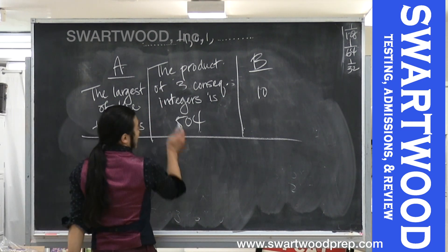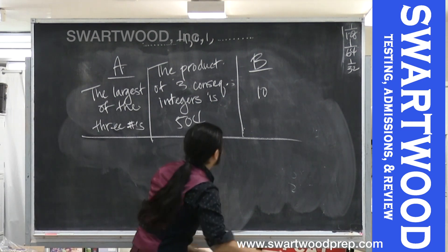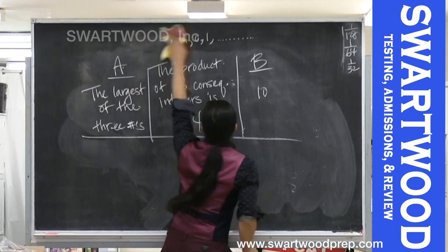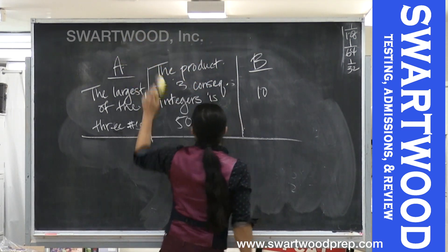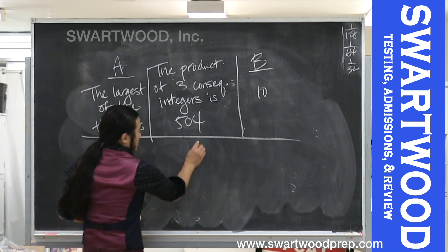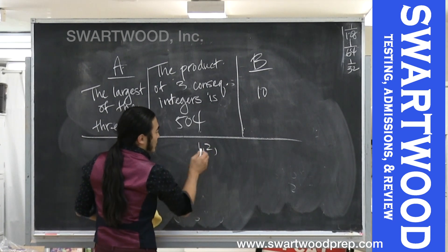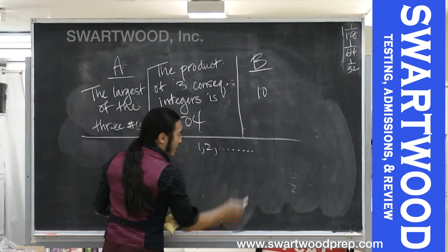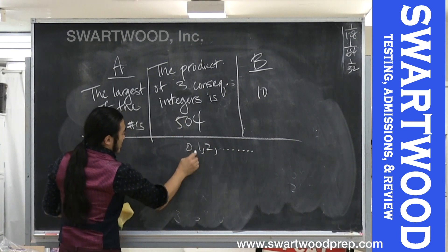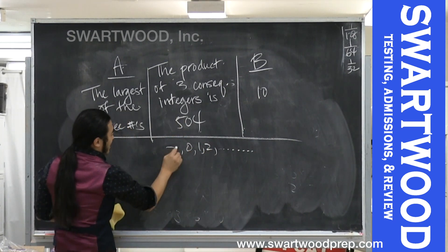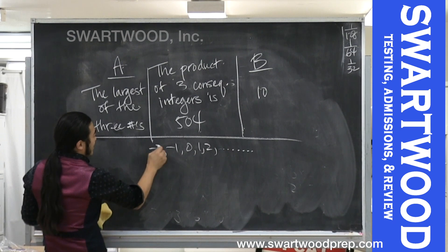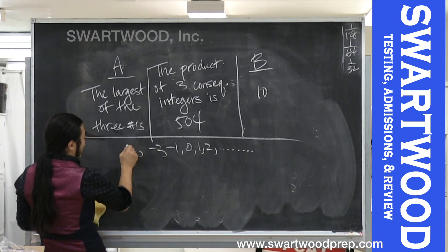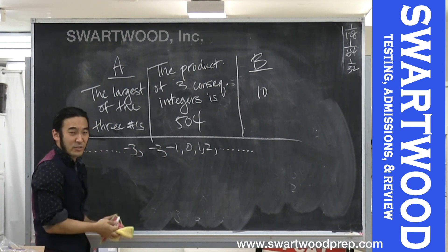Just a reminder: integers are 1, 2, 3 and so on going up, zero, and then negative one, negative two, negative three going down — all the positives, all the negatives, and zero.